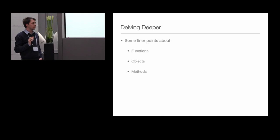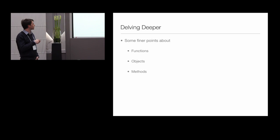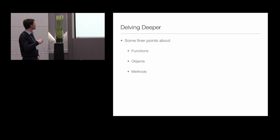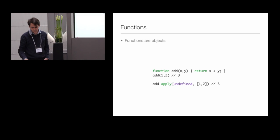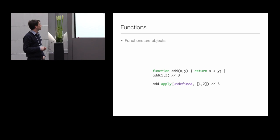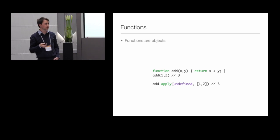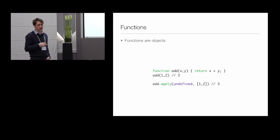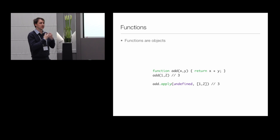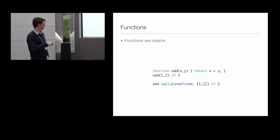For the rest of this first part I'll go deeper into how functions, objects, and methods work in JavaScript. Functions in JavaScript are actually just objects. You declare a function called add, it takes two parameters and returns a sum, and you can call it normally. But functions are objects with properties — they have built-in methods like apply, which lets you programmatically call a function where the arguments are stored in an array, so you can compute arguments at runtime and then call it.